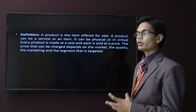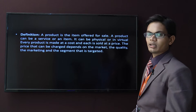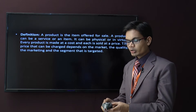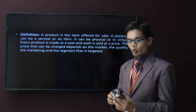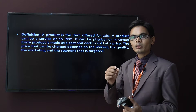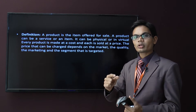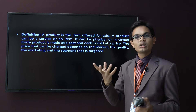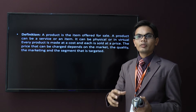Definition of a product. A product is an item offered for sale. I am offering this product to someone for the means of money — I am getting money in exchange. Anything I am offering to someone for money is a product. If I am offering something freely, it is not a product.